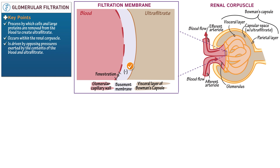Then indicate that the basement membrane is negatively charged. Then show that the visceral layer of Bowman's capsule comprises podocytes, which are epithelial cells that interlock with each other. Podocyte means foot-like. Now let's show the process of filtration across these layers.